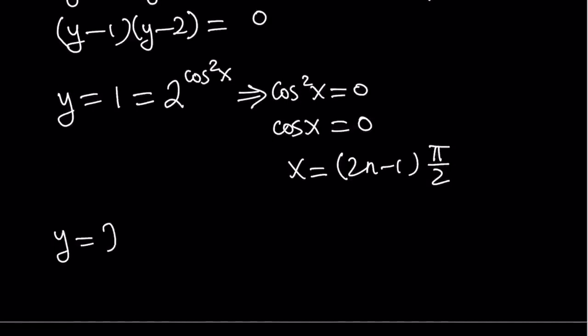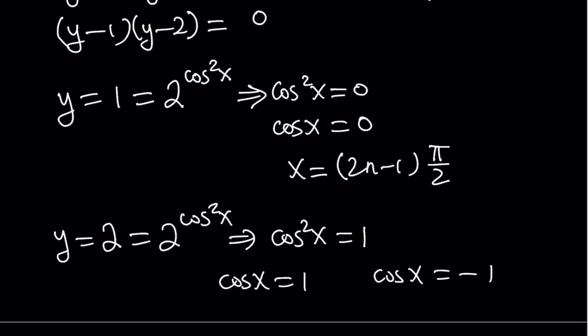Okay the second solution comes from y equals 2. If you set that equal to 2 to the power cosine squared x from here you get cosine squared x equals 1. But this gives you two solutions. Either cosine x is equal to 1 or cosine x is equal to negative 1. Okay great.